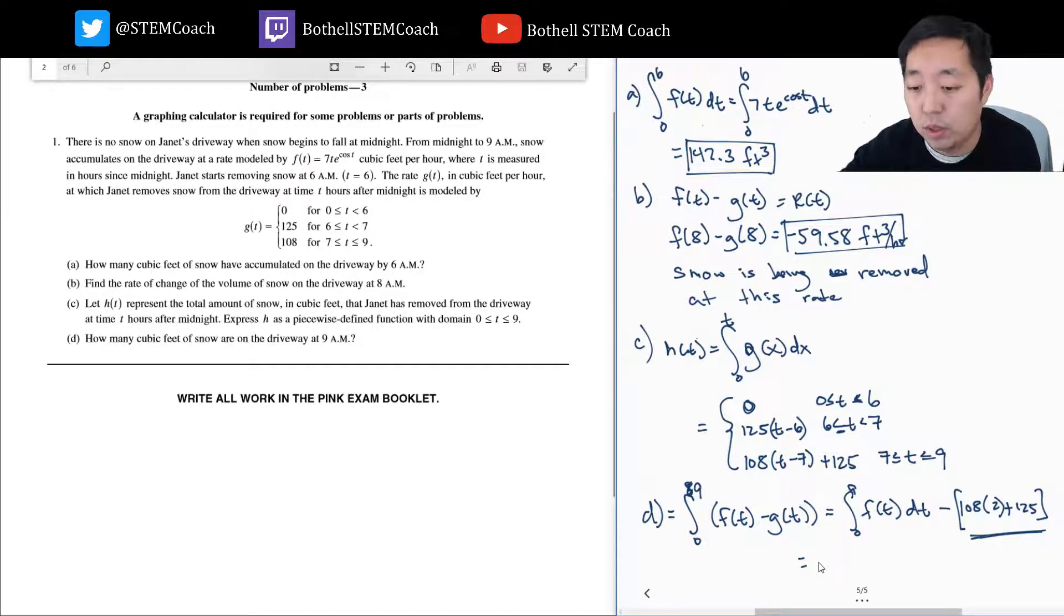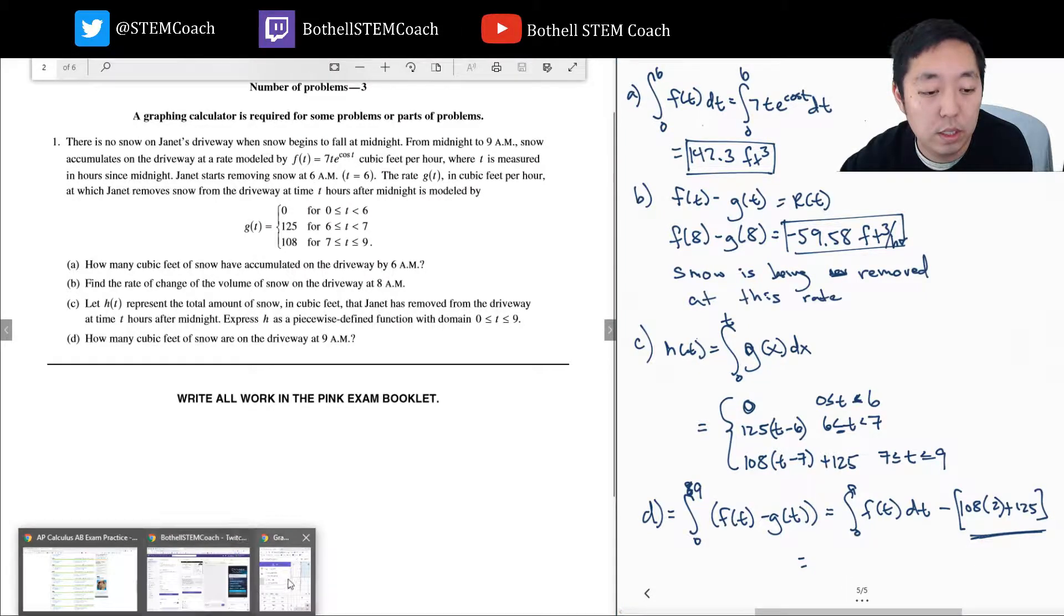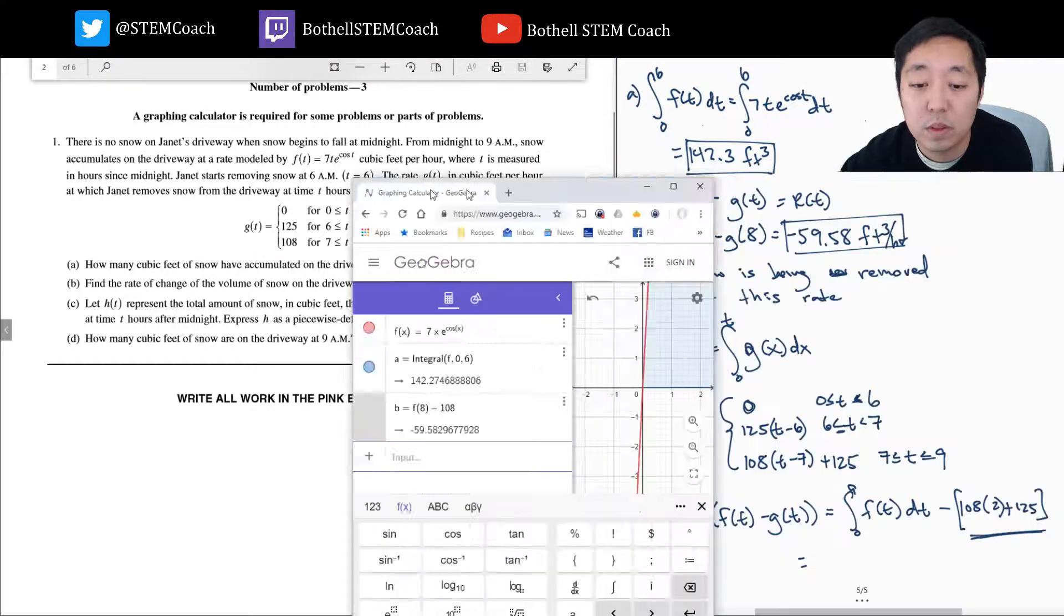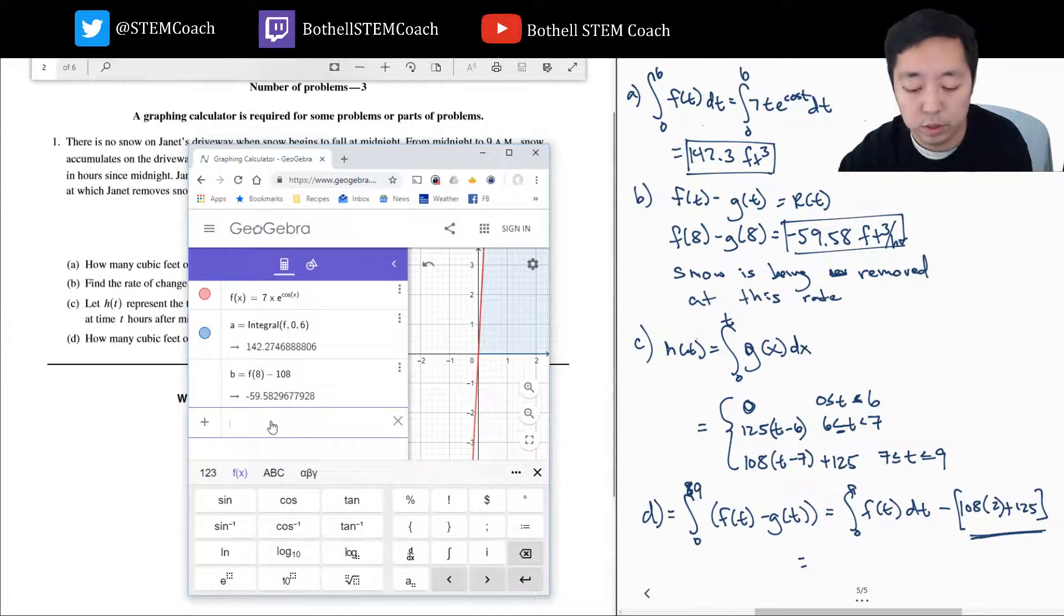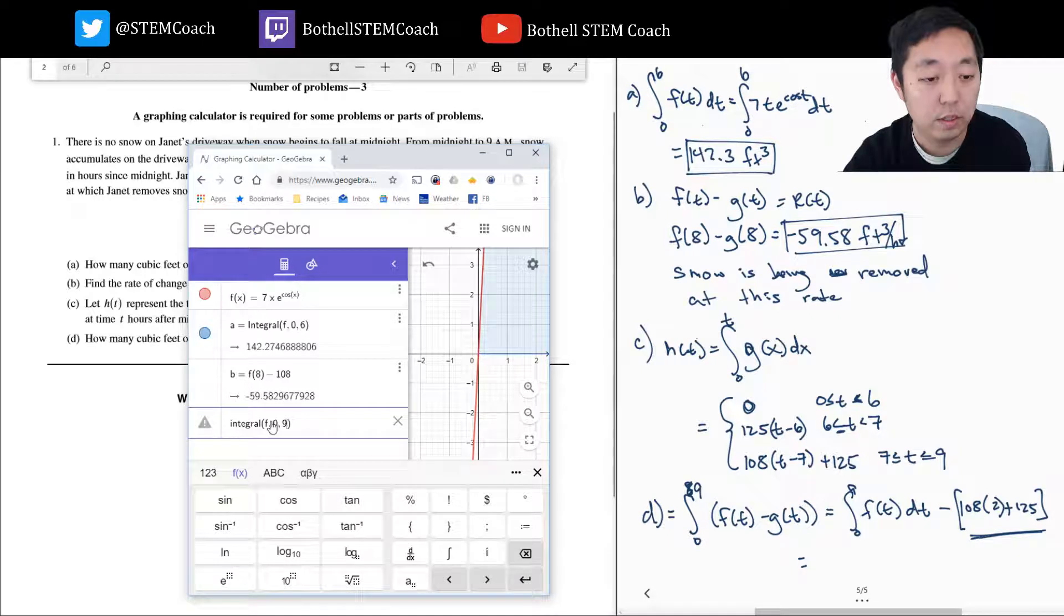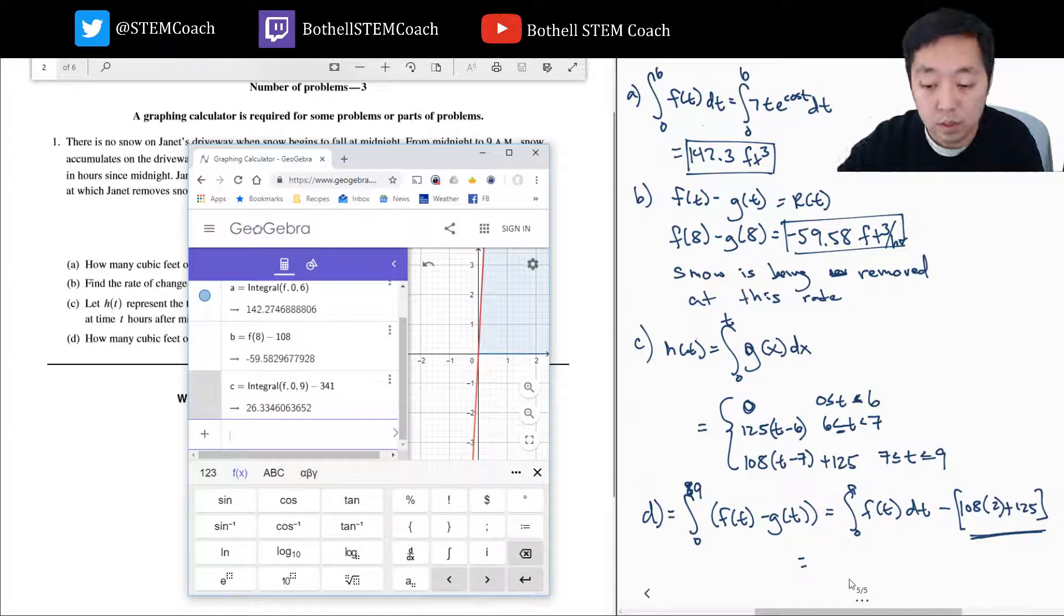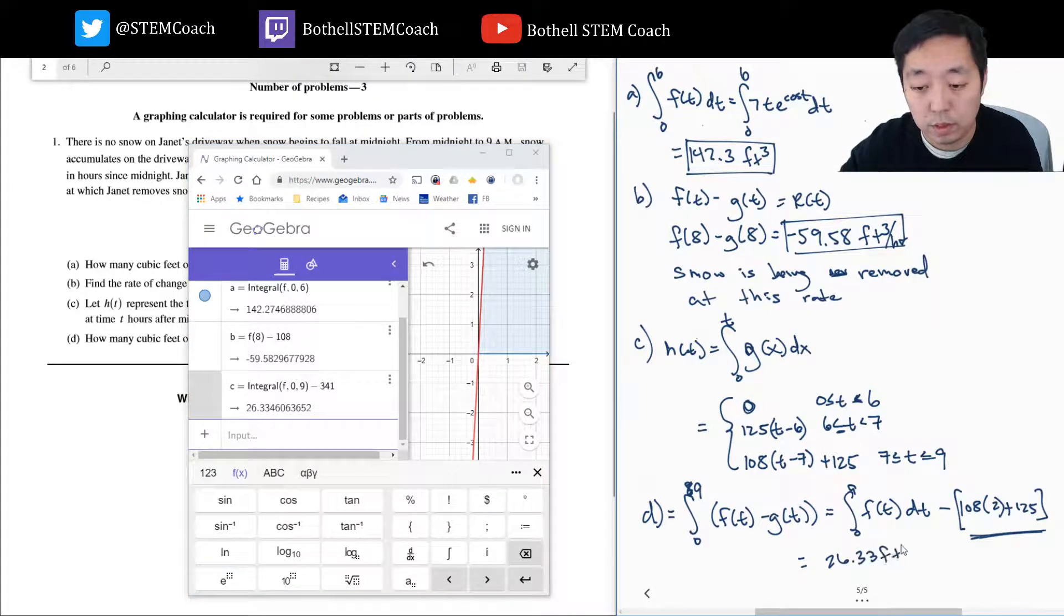Let's do this on our calculator. I'm going to move over here. I'm going to do the integral of f between 0 and 9 minus 108 times 2 plus 125: 26.33 cubic feet.